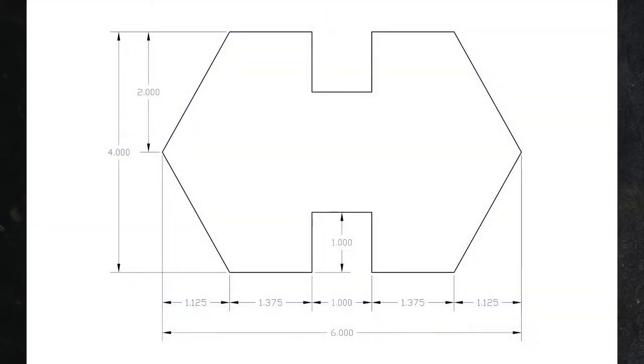To begin laying out the drawing, I'm going to start in the bottom left-hand corner and I'm going to start creating some reference points that we can draw lines between. Looking at the lower left-hand corner, I can come over 1.125 inches and that creates my first reference points.